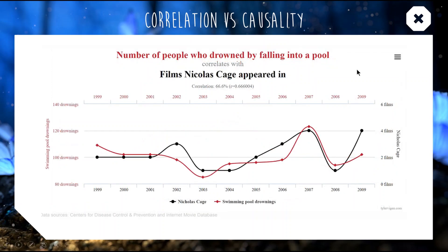And the last one's my favourite: the number of people who have drowned by falling into a pool correlating with the number of films Nicolas Cage has appeared in — a correlation of 56%. The graphs look pretty similar, but these two obviously have no effect on each other whatsoever. Pure mathematical coincidence.